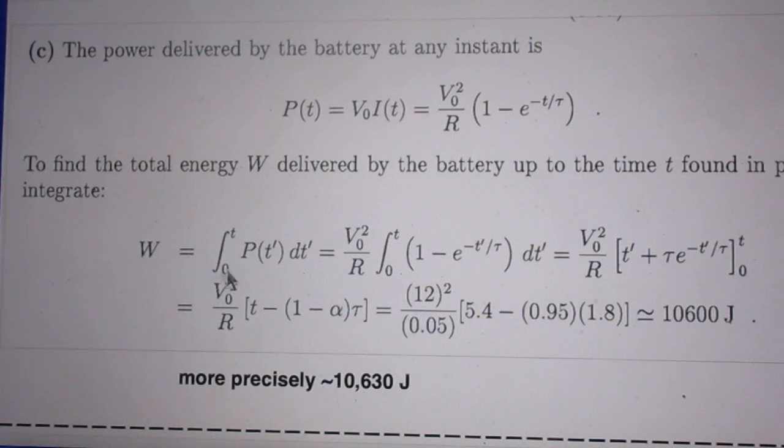We integrate this P of T, we call it T prime here, from 0 to T. And we find it is approximately 10,600 joules, more precisely about 10,630 joules.